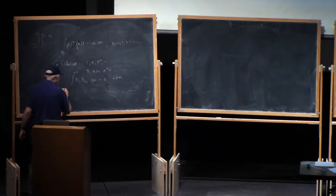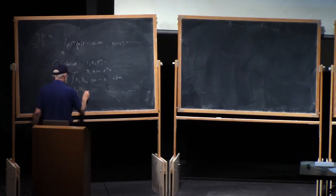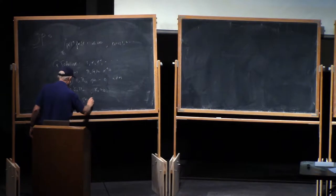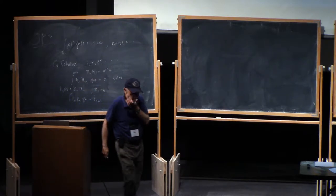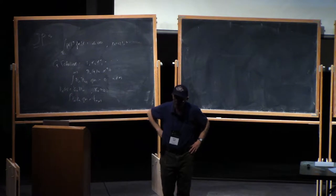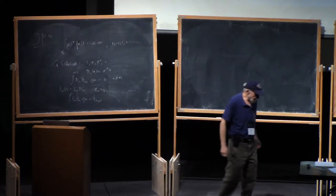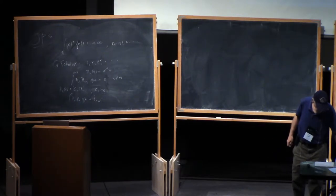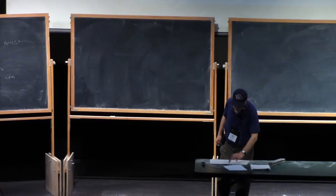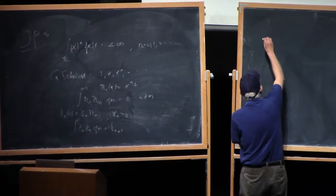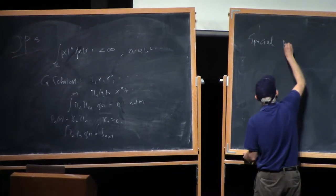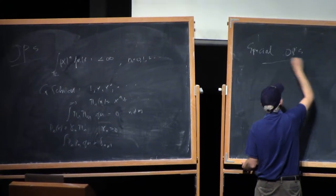And then one can introduce what are called the normalized polynomials, gamma_n times these pi_n's. Gamma_n's are positive with the property that the integral p_n p_m d mu equals delta_nm. Orthogonal polynomials are an extraordinarily important and useful part of analysis. What we're interested in are the asymptotics of the orthogonal polynomials as n gets large.